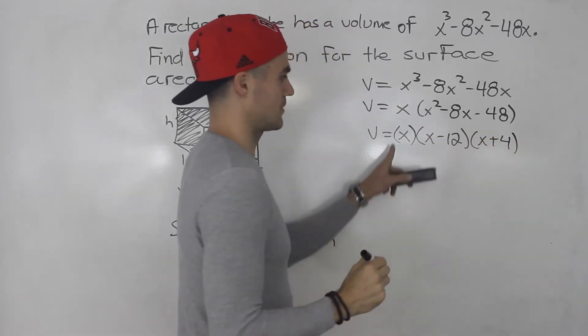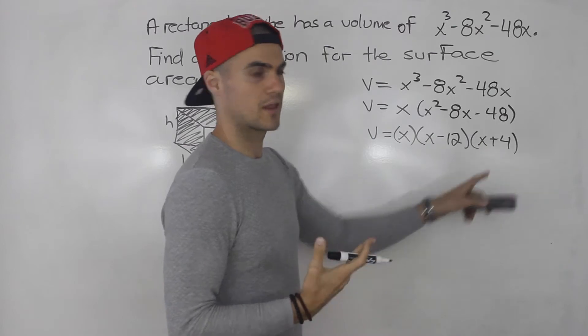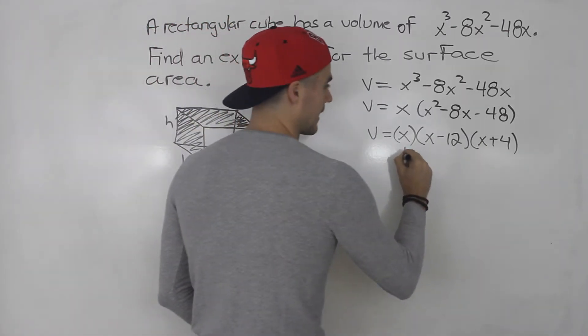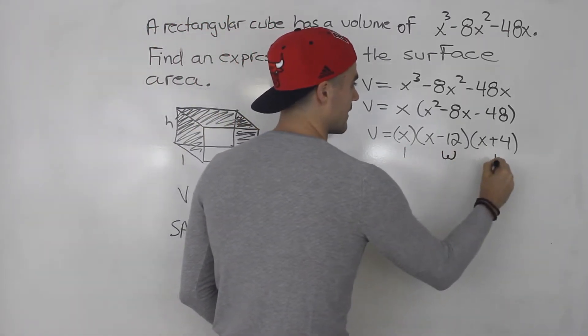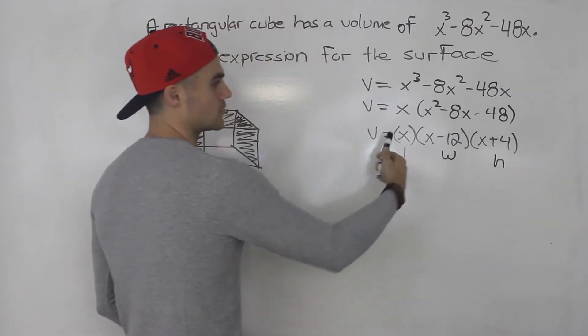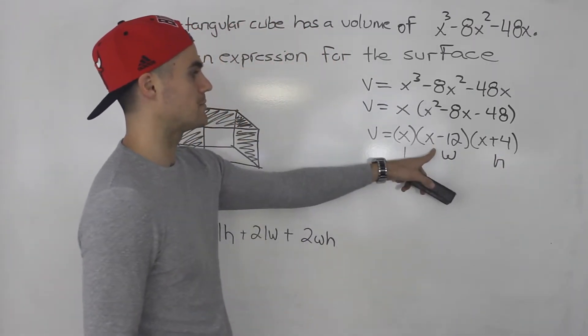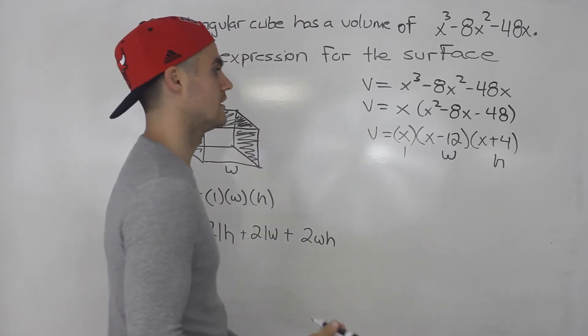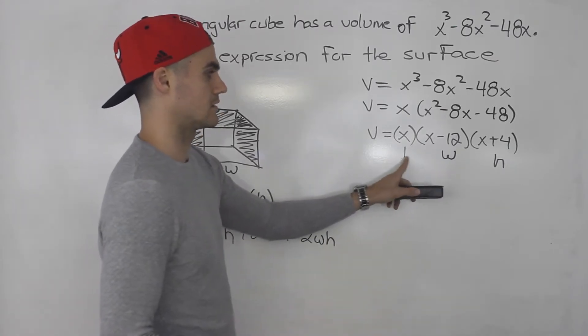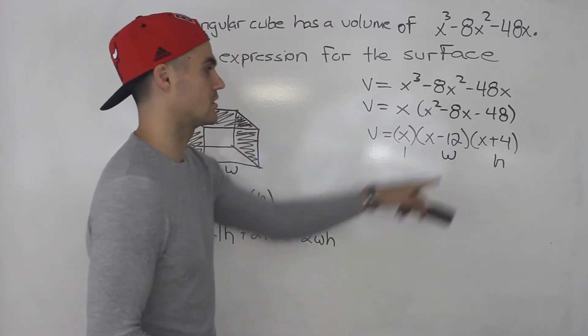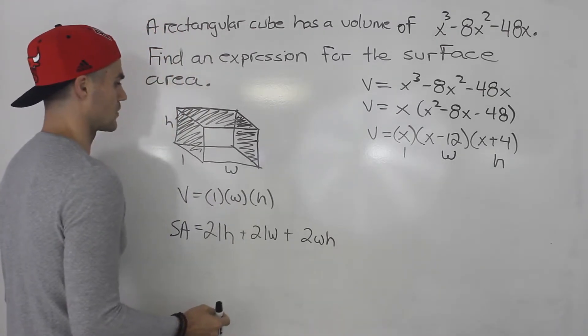And now notice that we have three expressions that are multiplying by each other. So that's basically like the length, the width, and then the height. It doesn't matter which order you put them in. This could have maybe been the length, this could have been the width. It doesn't matter, but three expressions, you can name one of the sides for each one.